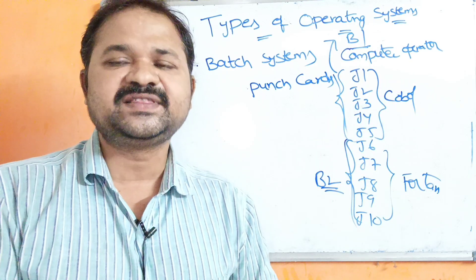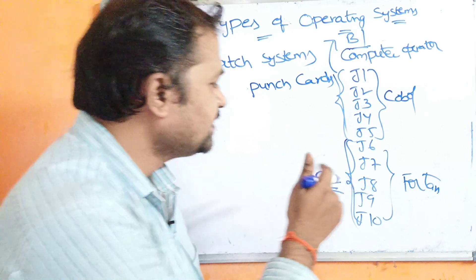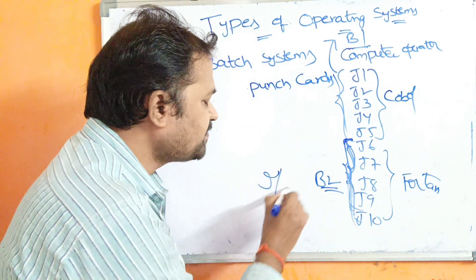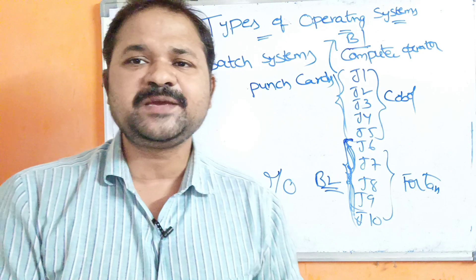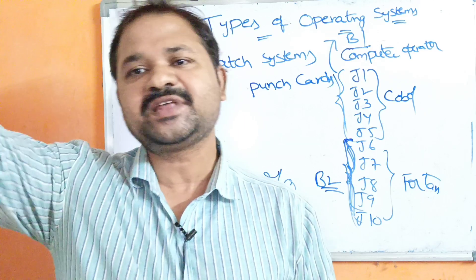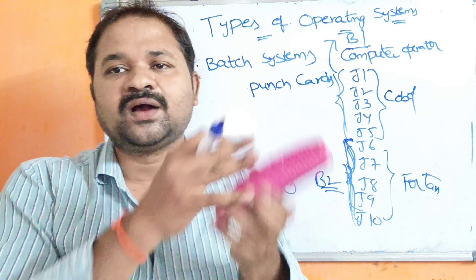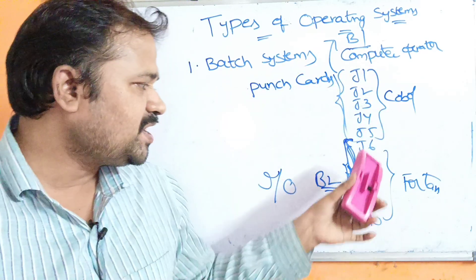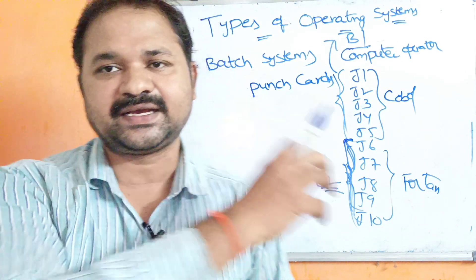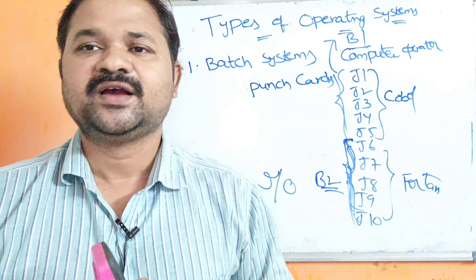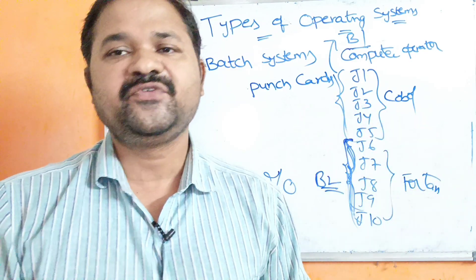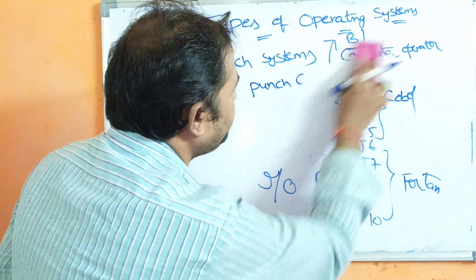The major problem with this approach is: if the CPU is executing B2 jobs and all those jobs are waiting for some I/O operations, during those I/O operations the CPU will sit idle. It is not possible to allocate the CPU to some other batch until the current batch completes execution. So most of the time the CPU sits idle during I/O operations. We can overcome this problem with the second type of system — the multiprogramming system.